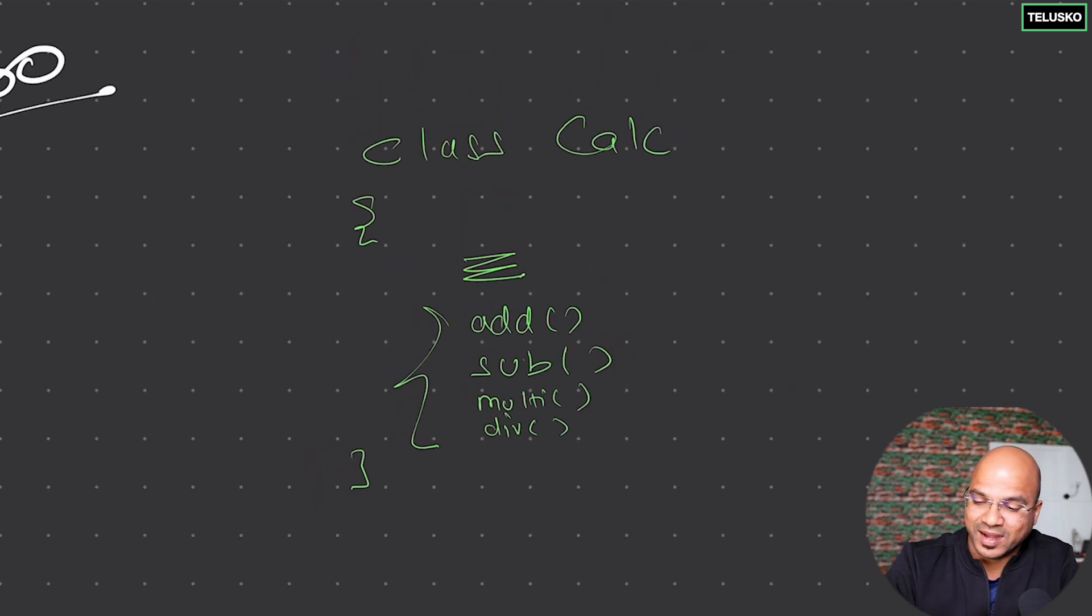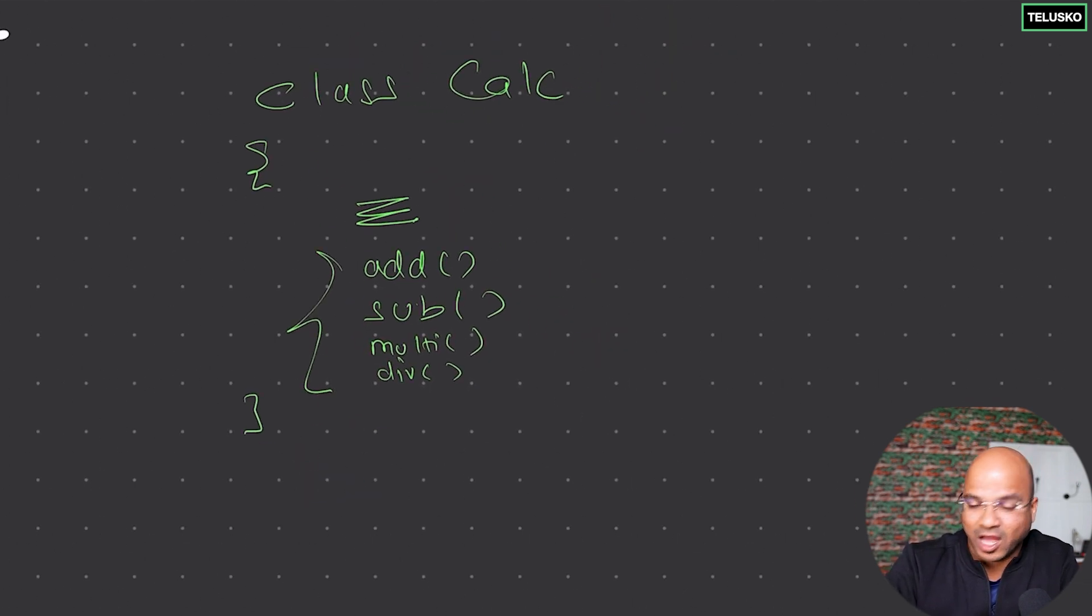But what if you want to create an advanced calculator now? Let's say if someone comes to you and says hey, you made an awesome calculator. Now I want you to create a scientific calculator or advanced calculator. Now you have a choice. You can edit the same class. But there's only one thing.